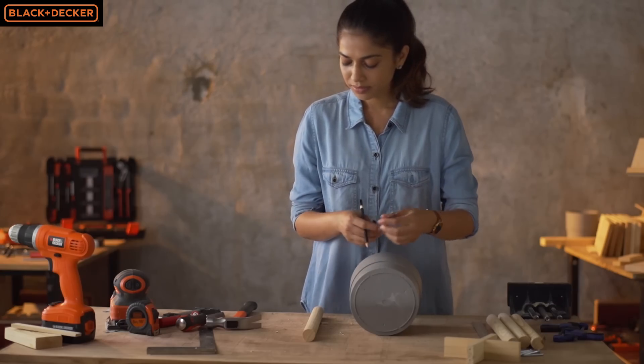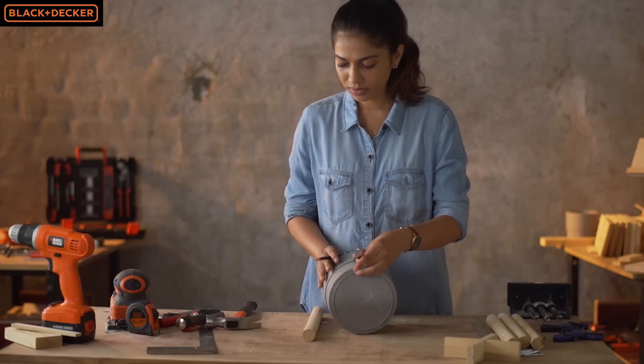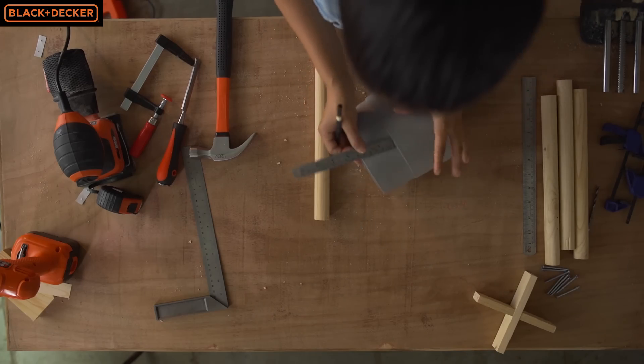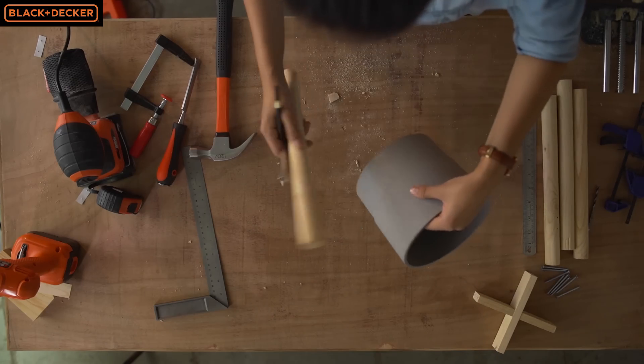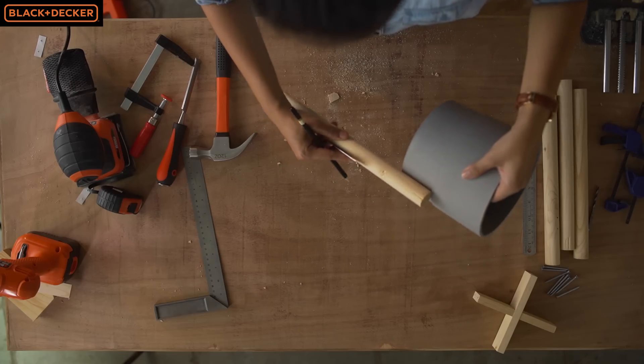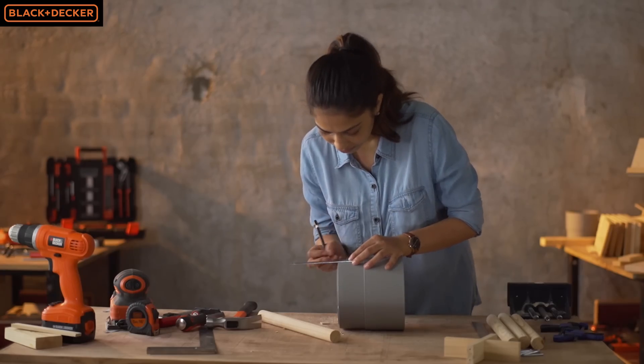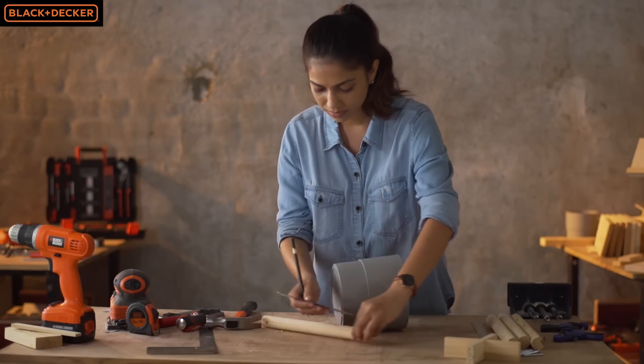I've decided to keep the height of my plant stand as 12 inches. So I bought four one inch thick dowels cut to size. I want the dowels to go up to the offset on my plant pot which measures two and a quarter inches. So I mark points at two and a quarter inches on all the dowels.